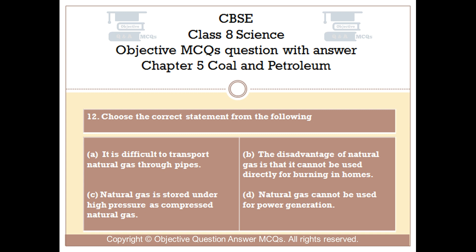Question number 12. Choose the correct statement from the following. Option A: It is difficult to transport natural gas through pipes. Option B: The disadvantage of natural gas is that it cannot be used directly for burning in homes. Option C: Natural gas is stored under high pressure as compressed natural gas. Option D: Natural gas cannot be used for power generation.